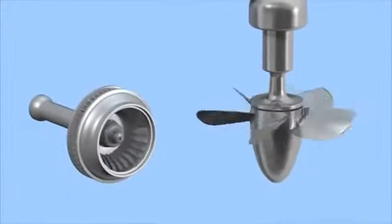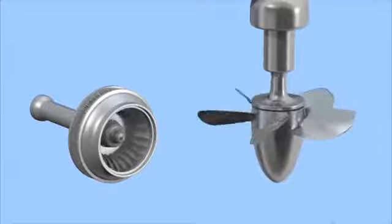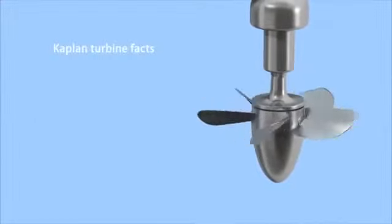The Kaplan turbine was an evolution of the Francis turbine. It was invented by the Austrian professor, Victor Kaplan, in 1913. Kaplan turbines achieve efficiencies of about 95%.